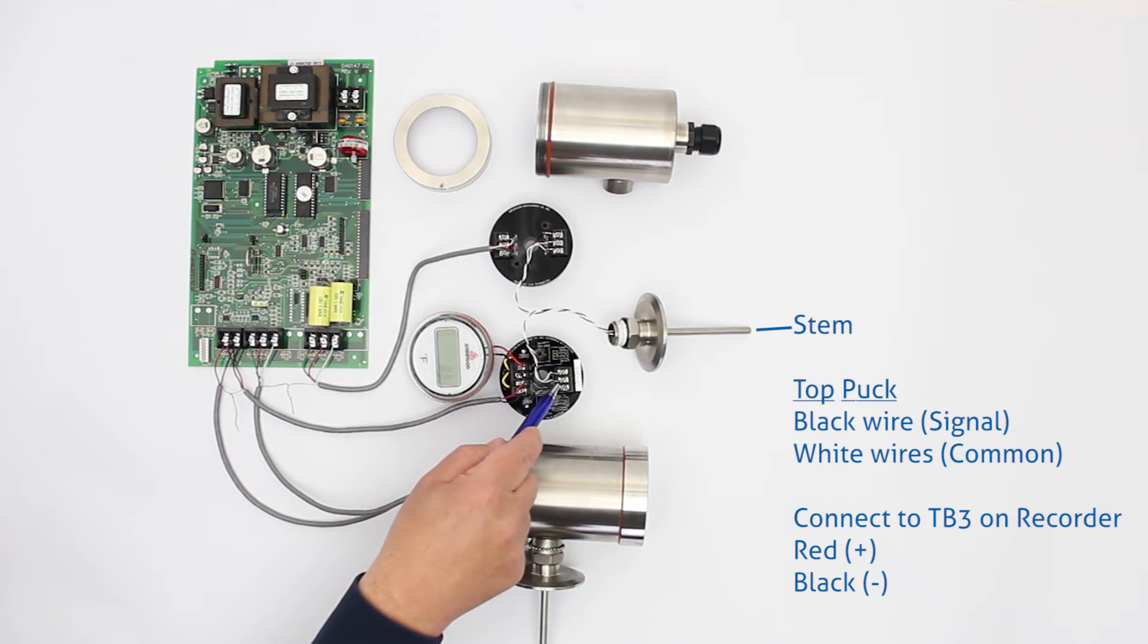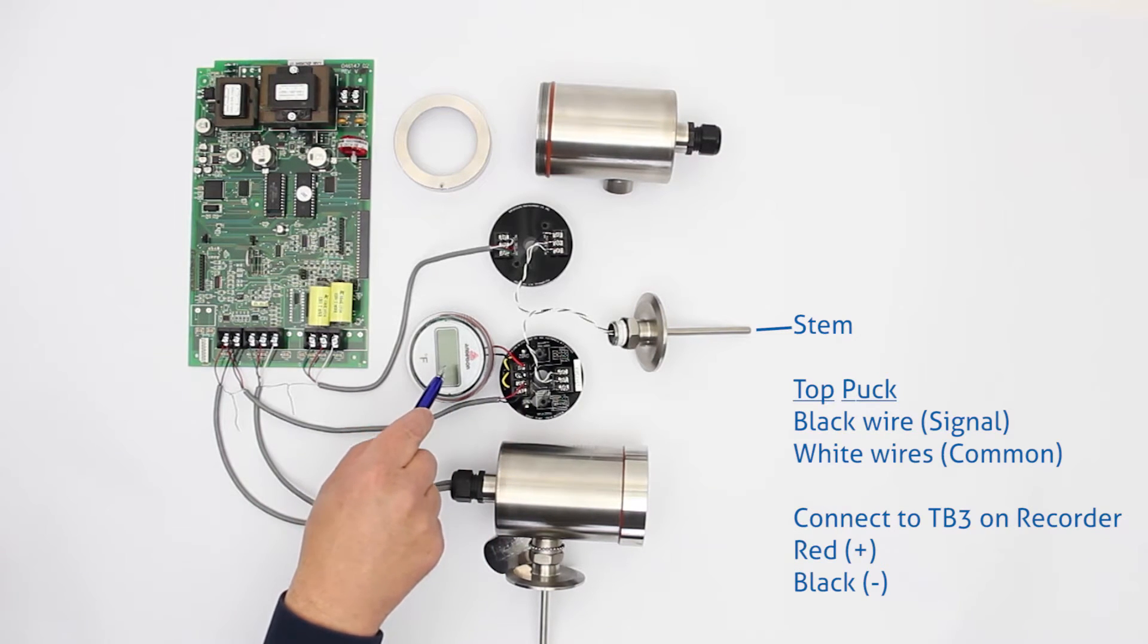The other element of the stem goes to the top puck inside of the sensor and again we have our signal wire and our two commons, the black and the two whites and then this actually is just driving, this puck drives the display on the sensor.